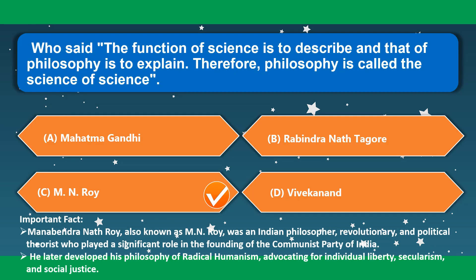Who said 'the function of science is to describe and that of philosophy is to explain; therefore philosophy is called the science of science'? This is M.N. Roy. M.N. Roy was an Indian philosopher, revolutionary and political theorist who played a significant role in the founding of the Communist Party of India, and later developed his philosophy of radical humanism advocating for individual liberty, secularism and social justice.